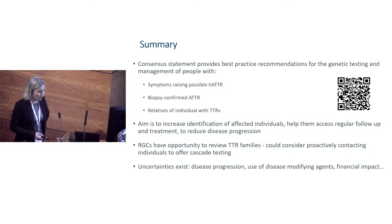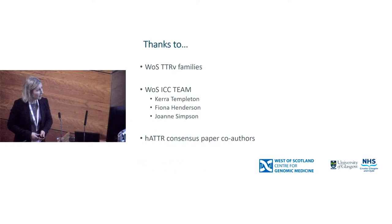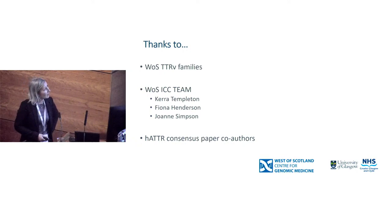To summarise: the consensus statement provides best practice recommendations for genetic testing and management of people with hereditary ATTR or at risk. The aim is to increase identification of affected individuals and help them access regular follow-up, treatment, and potentially reduce disease progression. Regional genetic centres have the opportunity to review TTR families and could proactively contact individuals to offer cascade testing. Uncertainties still exist about disease progression and natural history, and studies like Transcend are hopefully going to be informative, as will the use of these modifying agents and their financial impact on the NHS.